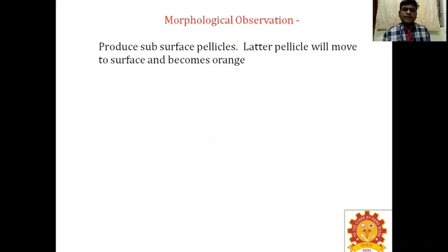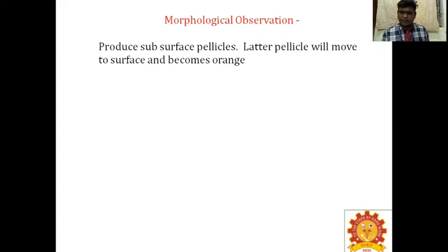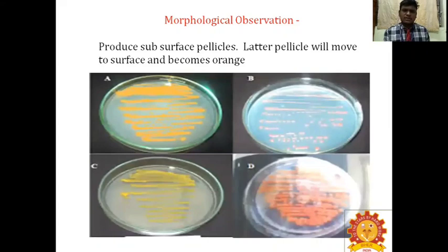Morphological observation of Gluconacetobacter diazotrophicus: it produces subsurface pellicles, and later the pellicle moves to the surface and becomes orange. The suitable medium is LGI semi-solid medium. Solid medium has 15–20% agar concentration; semi-solid medium has 0.3% agar; liquid medium has no agar and is called broth. You can see the color change and subsurface pellicle formation in this medium.